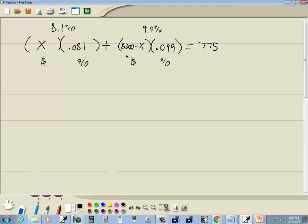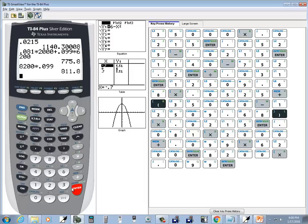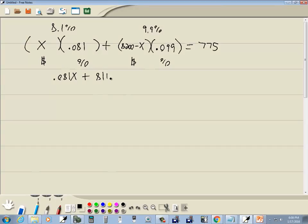Well, now I want to solve this. So I've got X times 0.081. That gives us 0.081X plus 8200 times 0.099. So that gives us 811.8. Negative X times 0.099 gives us negative 0.099X.